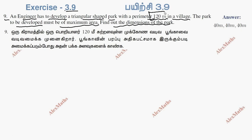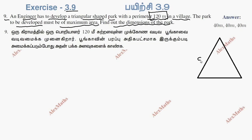Perimeter is fixed. Now we have a triangle with sides a, b, c. A plus b plus c is the perimeter, and this is 120.